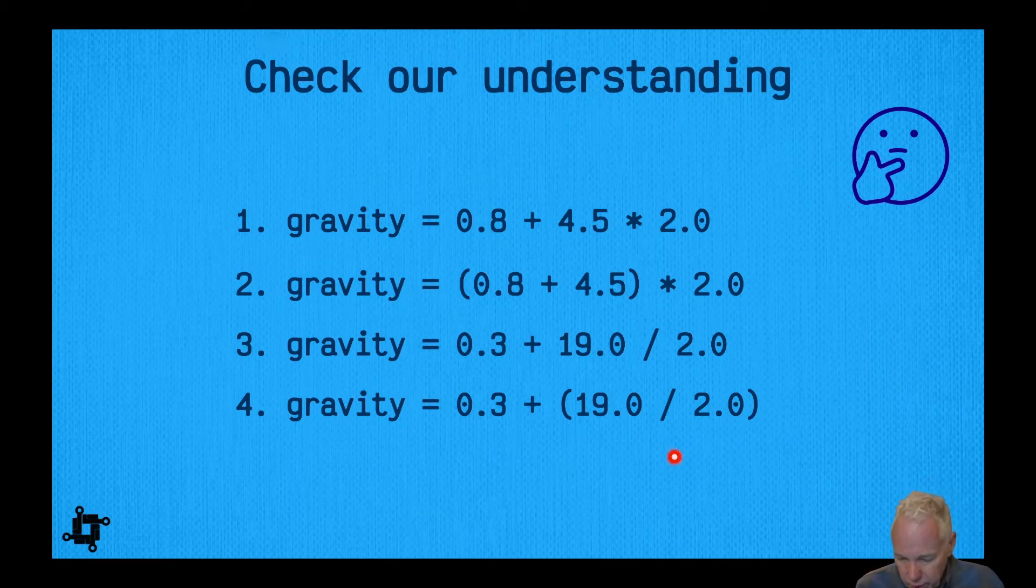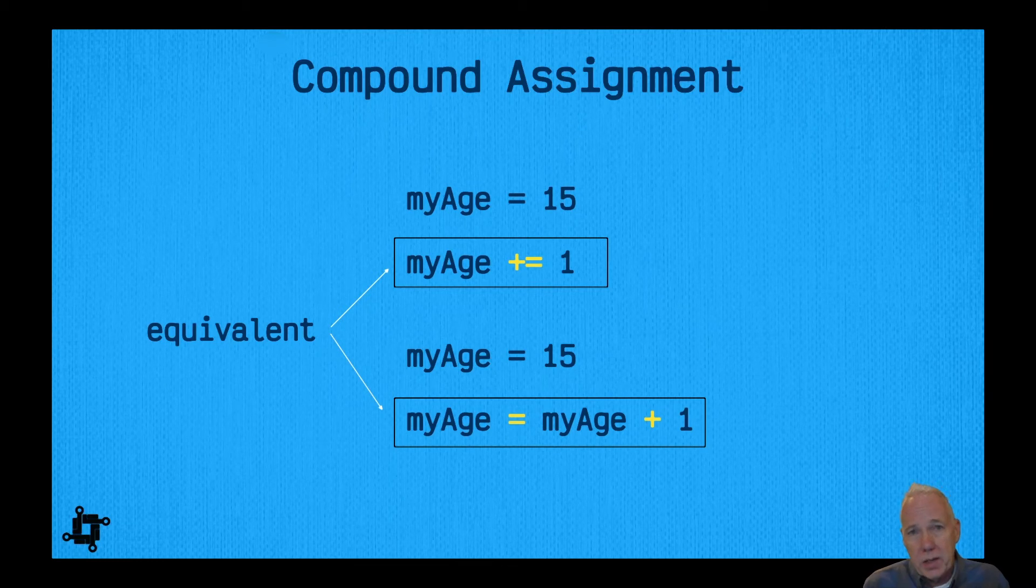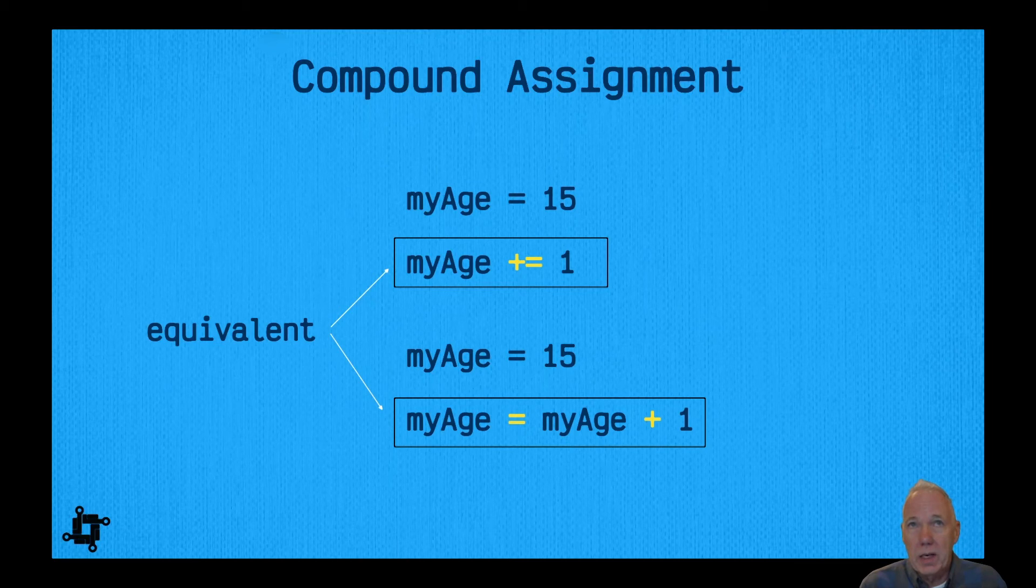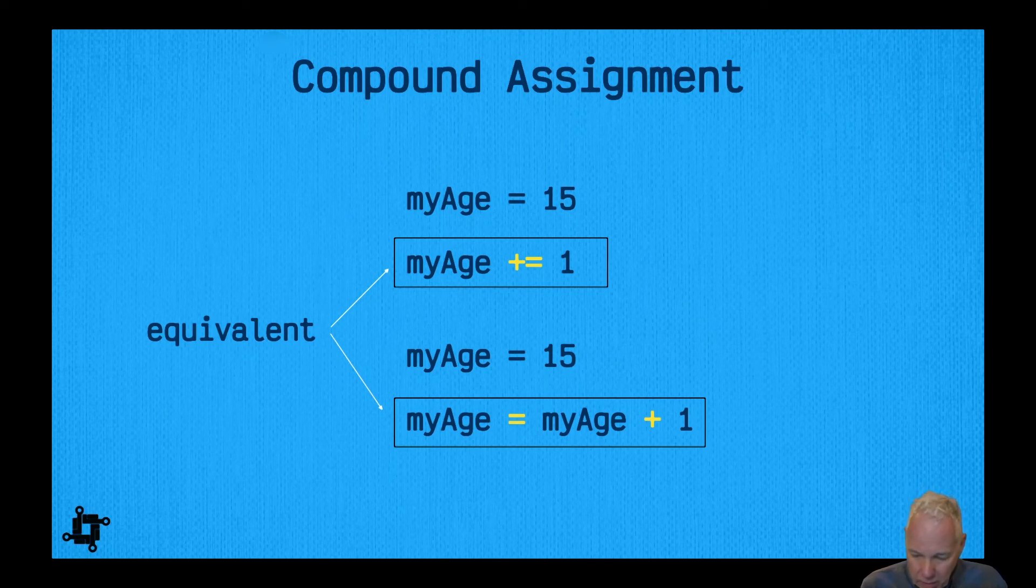The final thing to talk about is compound assignments, and compound assignments are really just shortcuts. It's another term that you might hear in the software development world: syntactic sugar. What it means is that you don't really need it, you can completely code without it, but sometimes it's nice to write where you don't have to type as much and it'll read a little easier.